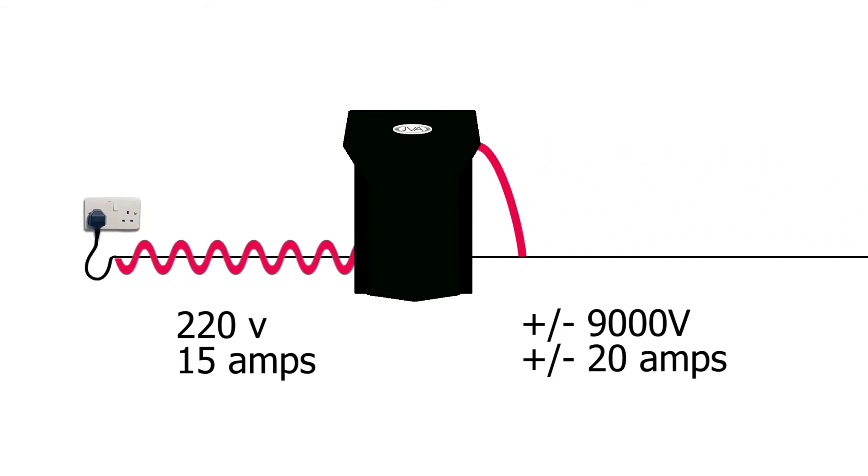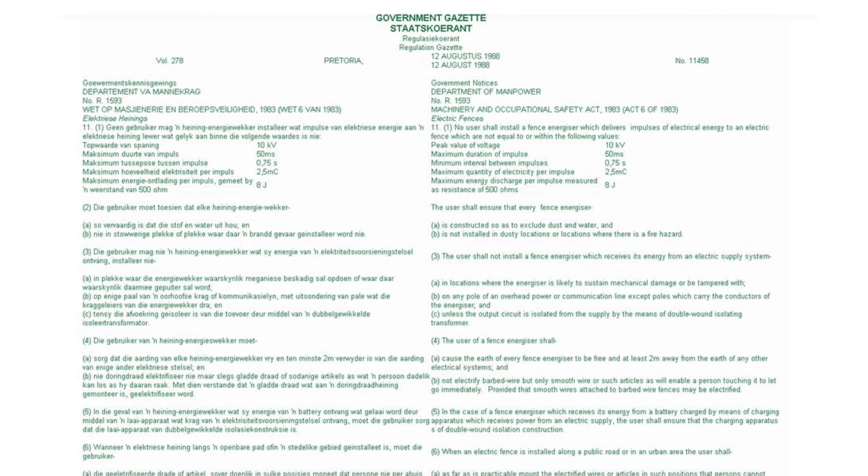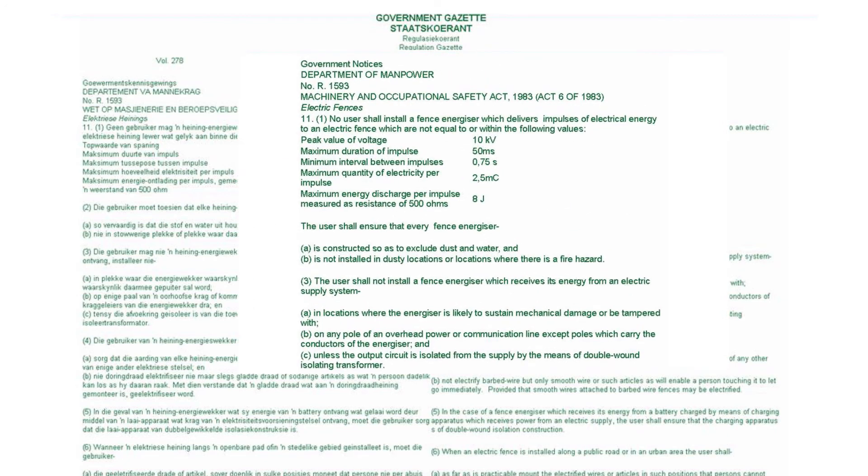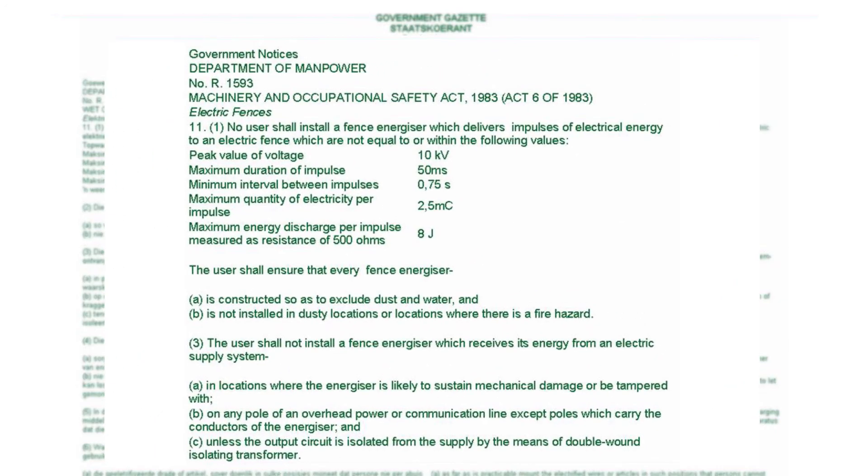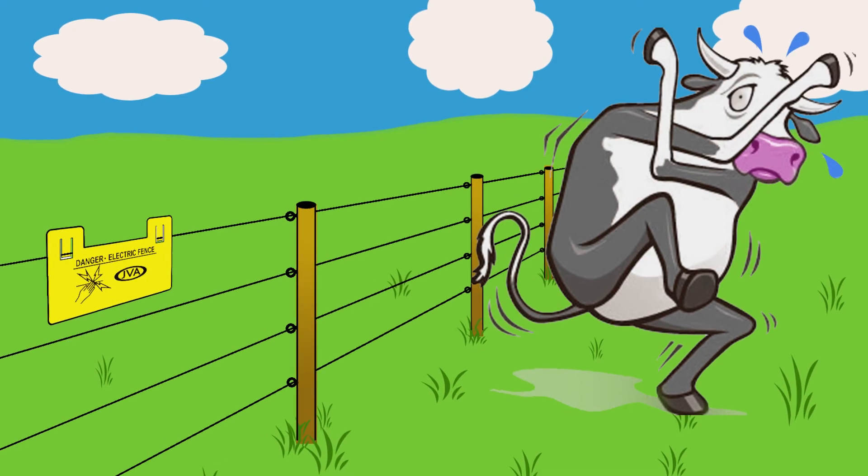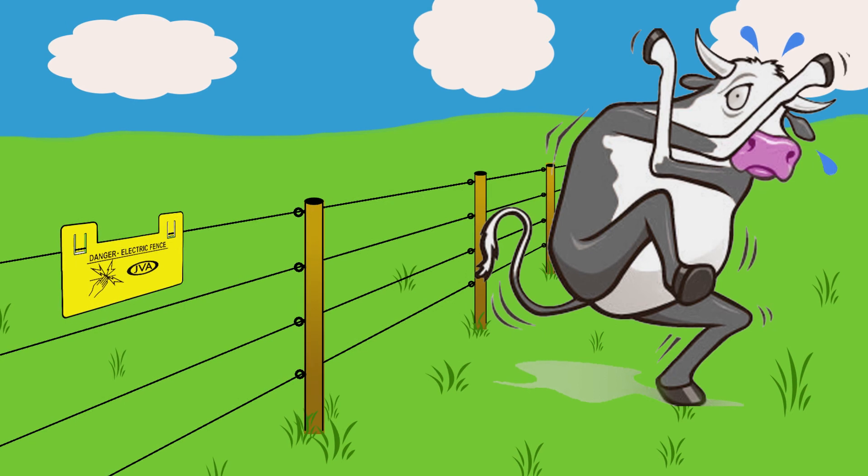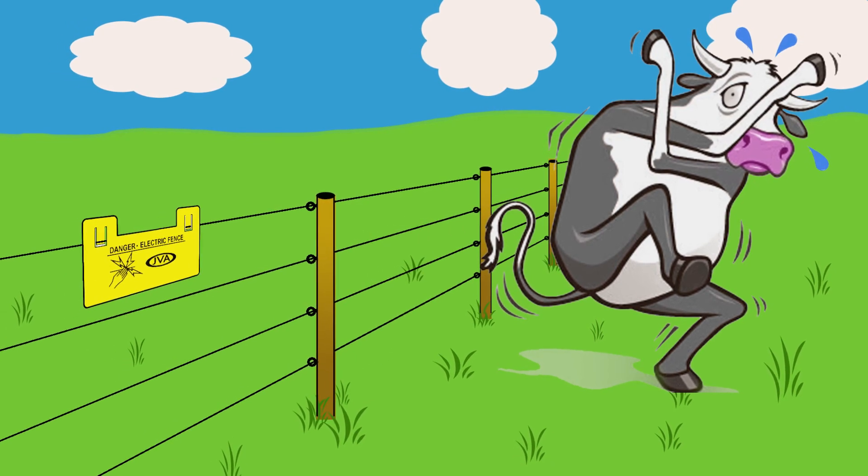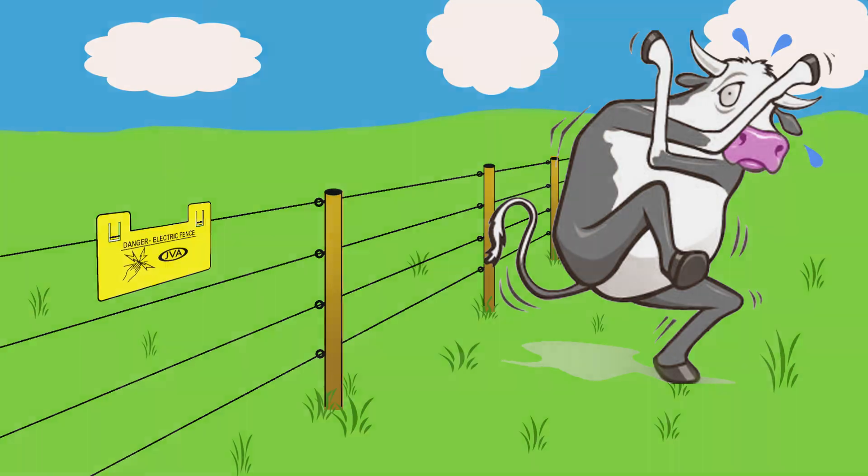The shock from a well-made electric fence energizer is non-lethal because it's heavily regulated by Australian and international safety standards which are backed by laws. The standards stipulate the maximum energy in each pulse and the rate of these pulses. The result is that a shock from an electric fence is painful enough to stop any animal from wanting to repeat the experience, but it is safe.